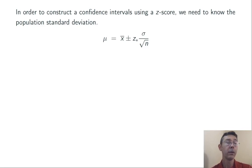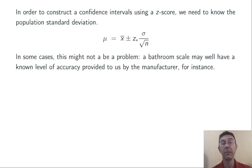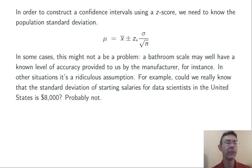This formula assumes that we know the population standard deviation sigma. In some cases, that's a pretty good assumption. For example, we might be doing measurements on a piece of scientific equipment with known error tolerance, like a bathroom scale, where the level of accuracy might be provided by the manufacturer. Often, however, it's a ridiculous assumption to think that we might know the population standard deviation in advance. For example, could we really know in advance that the standard deviation of starting salaries for all data scientists in the United States is $8,000?